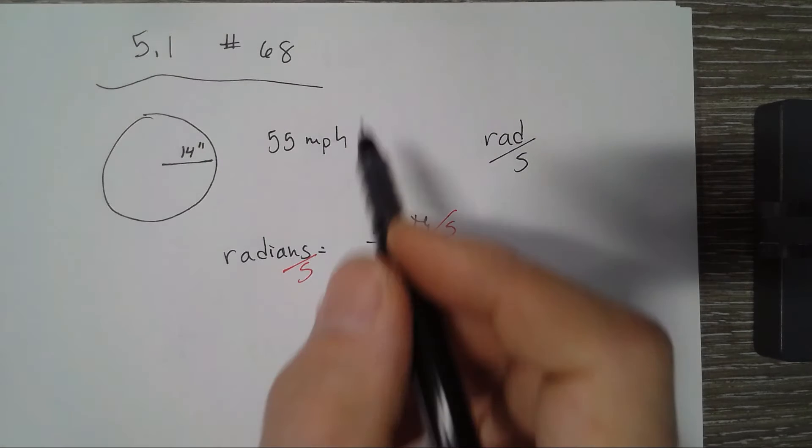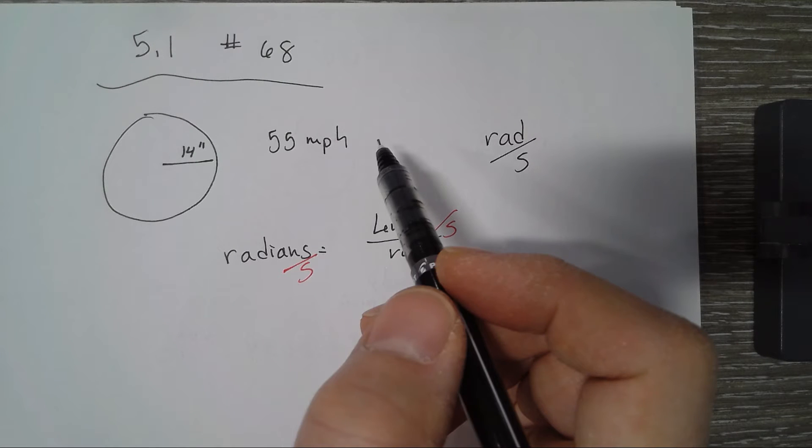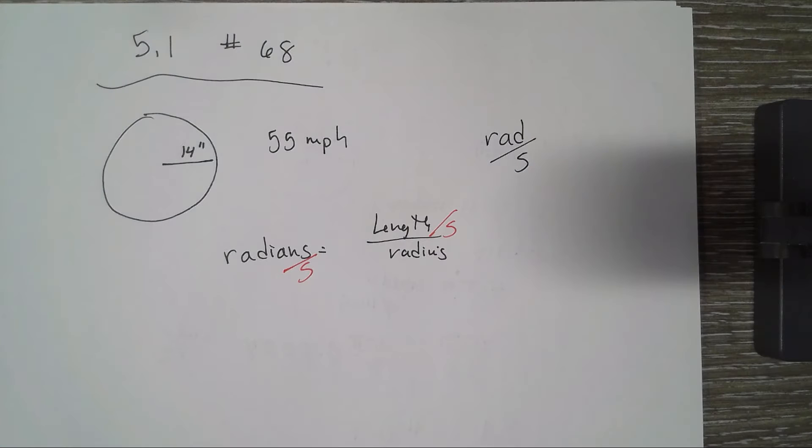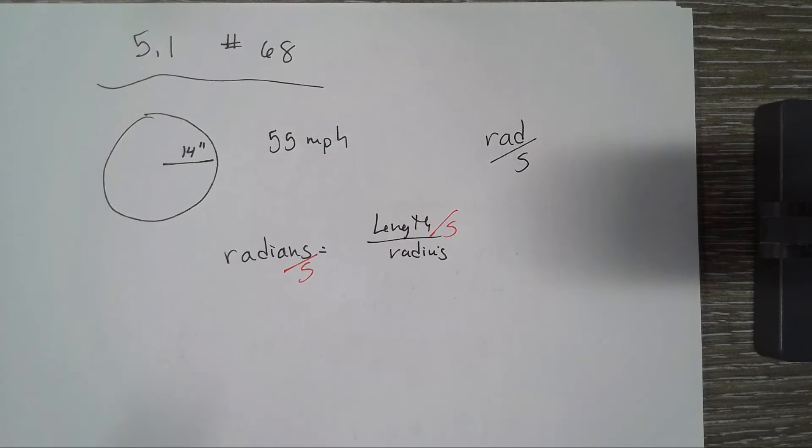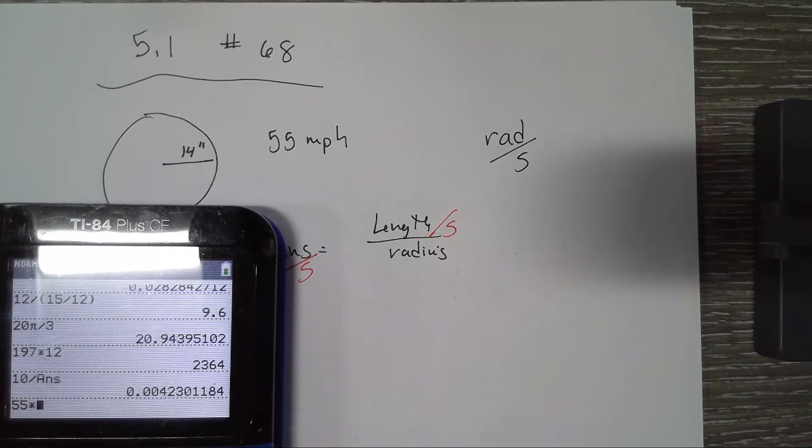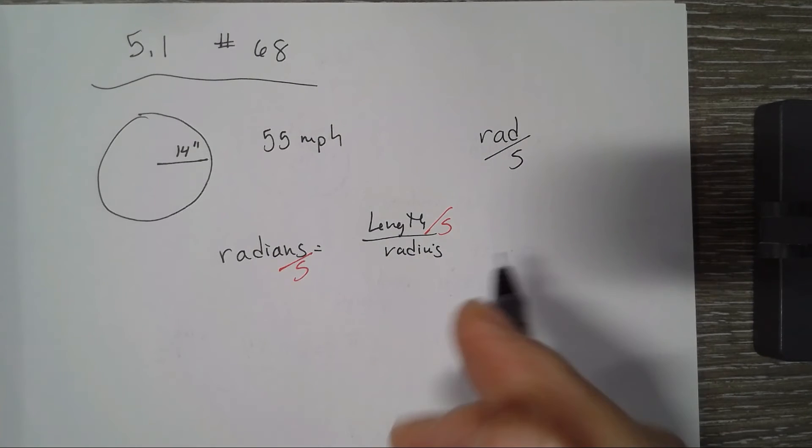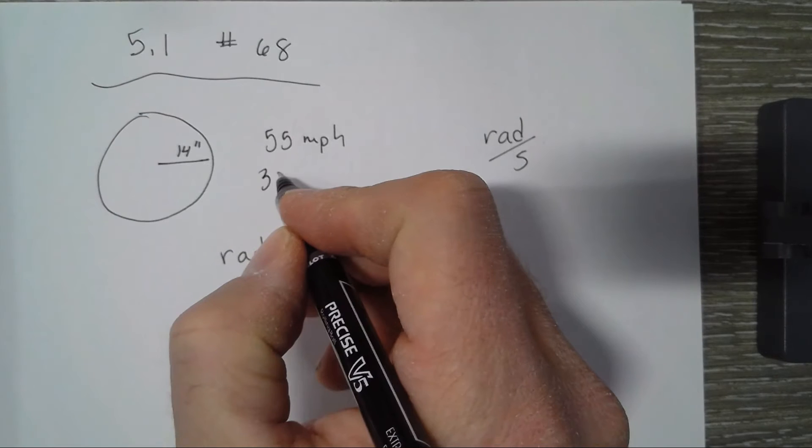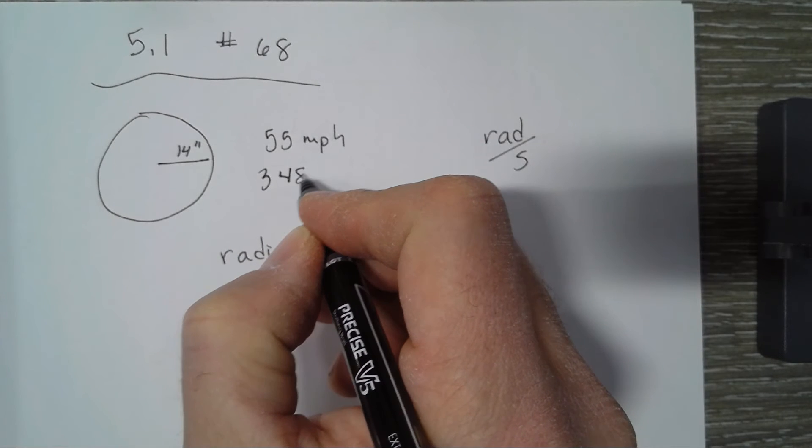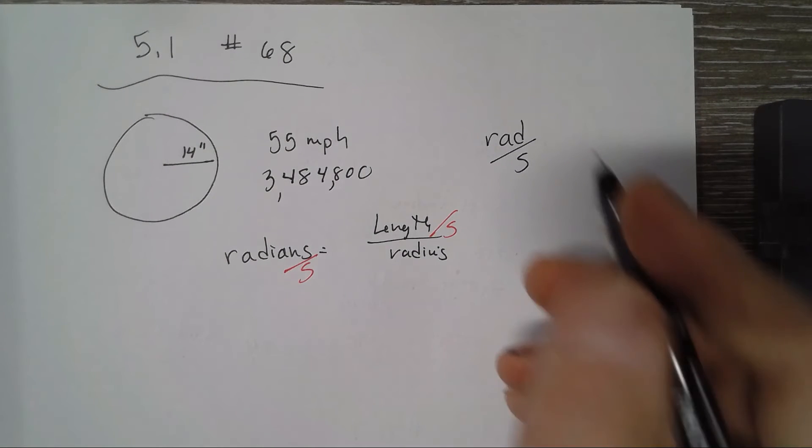Now we've got miles per hour, so we could take 55 miles and convert to inches per hour. We could take our calculator, multiply 55 times 5,280 because that's how many feet are in a mile, times 12 because there's 12 inches in a foot, and we get a big old number. It would be 3,480,800, so 3 million 484 thousand. That will be inches per hour.